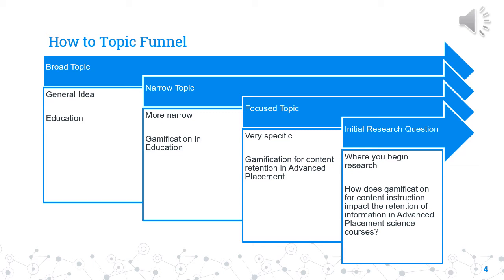After going through the broad, narrow, and focused topic process, I can develop an initial research question. This is where the research will begin. As you move through the research process, know that your initial research question should and will change. In this case, my initial research question is: how does gamification for content instruction impact the retention of information in advanced placement science courses?